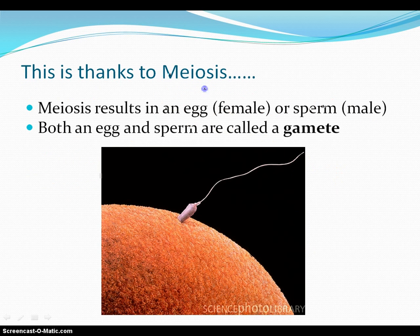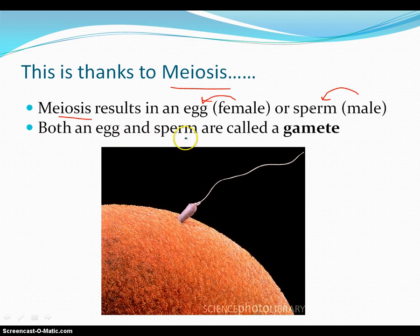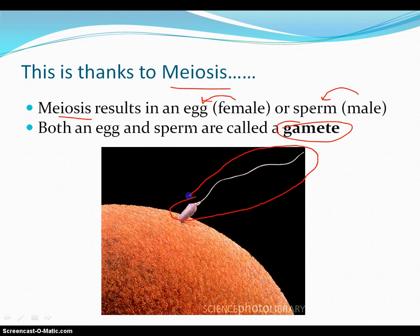All of that is thanks to this process called meiosis. Meiosis is a process that results in an egg or a sperm, depending on if you're male or female. If you're female, you produce eggs; if you're male, you produce sperm. Both an egg and a sperm are called a gamete. This thing that I just circled right here — that's a sperm cell, and a sperm cell is a gamete.